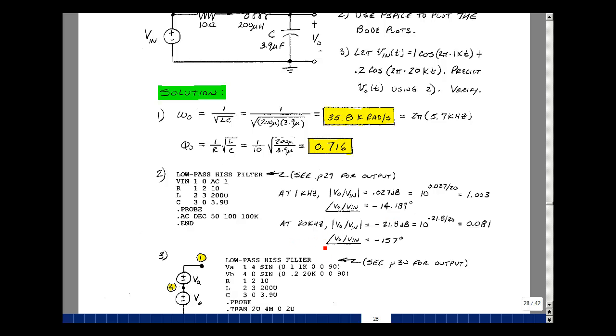Doing the same thing at 20 kilohertz, I had a gain of minus 21.8 dB. 10 raised to the minus 21.8 divided by 20 is 0.081, and the angle is 157 degrees. For the signals that are in our audio band, and low enough, we're seeing a gain of almost 1.